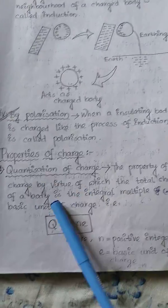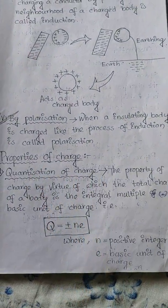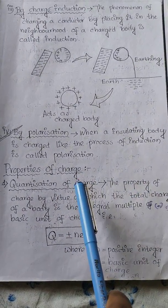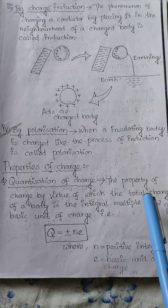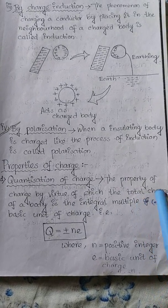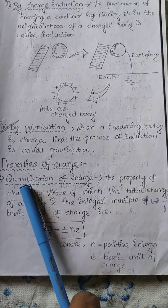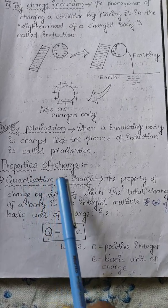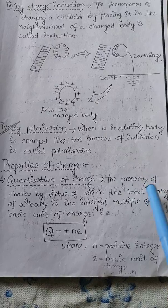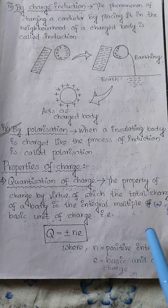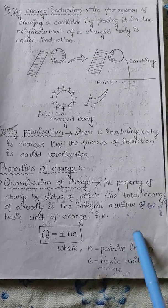Properties of charge: First is quantization of charge. Quantization means charge is measured in discrete units. The charge on a body depends on how many electrons are lost or gained, so the charge is quantized - it's discrete and discontinuous. The first electron gives a certain charge, and different numbers of electrons give different charges.